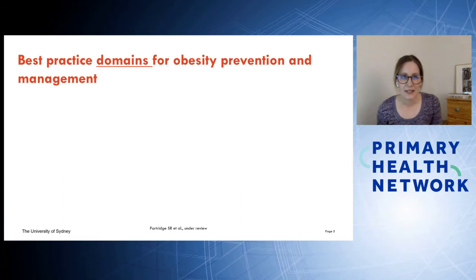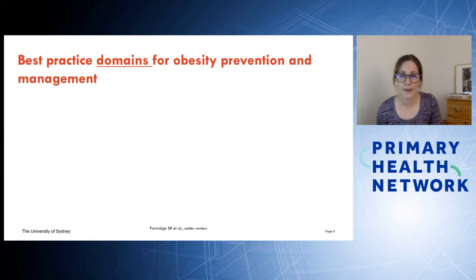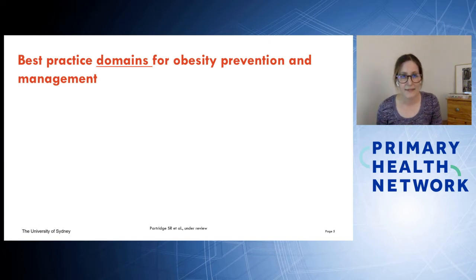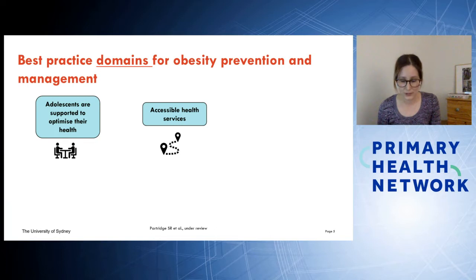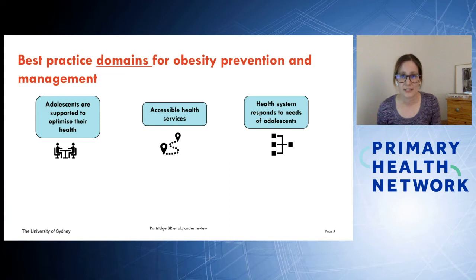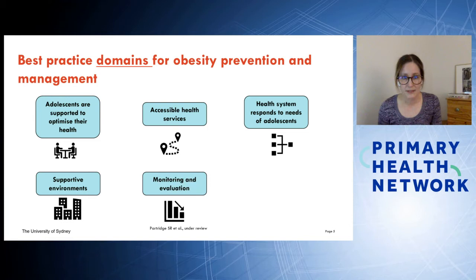One piece of my recent research looked at strategies implemented across New South Wales specifically for adolescent obesity prevention and management. We identified 41 strategies currently being implemented across rural and regional areas, and compared them to a best practice framework created using published guidelines — including the NSW Youth Health Framework, the national framework, and best practice guidelines for obesity. The domains identified were: adolescents should be supported to optimise their health; have accessible health services; a health system that responds to their needs; supportive environments; monitoring and evaluation of all strategies; and a strong focus on health equity targeting those most at risk.